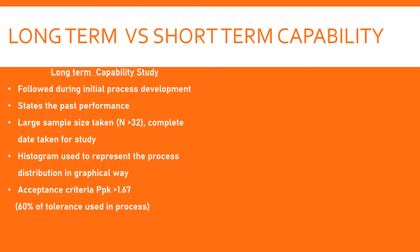A histogram is made to represent the complete distribution of all data. The acceptance criteria is that PPK should be greater than 1.67. That means the current process is utilizing only 60% of the specification, so the customer gets confidence that critical and major parameters will be achieved consistently in the longer run.